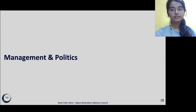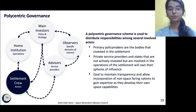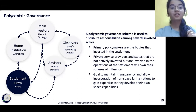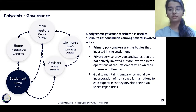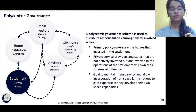Since we've actively looked at economics, let's move on to the management and politics of the base itself. Our goal was to establish a chance for non-spacefaring countries and civilizations to gain expertise on the lunar base, which is why we went with the polycentric model — one of the best ways to achieve collective action. In our polycentric governance, we have the main investors, observers, advisors, and the settlement crew — which is open not just to crew but also to tourists — as well as home institutions involved in operations. Our primary policymakers are the bodies that invested in the settlement, private service providers, and states not actively invested but involved in operations, who will have their own spheres of influence.